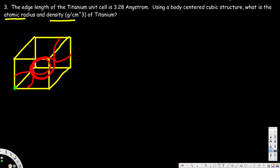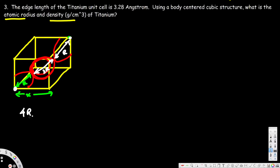We're interested in finding the distance from this corner to this corner, because that's going to help us relate the radius to the edge length. The edge length is x, the radius of the corner atom is r, the atom in the middle has diameter 2r, and the far corner contributes another r. So from corner to corner the total distance is 4r. We need to connect this to the edge length in order to find the radius.